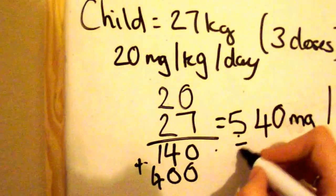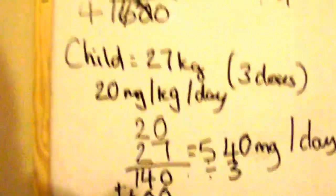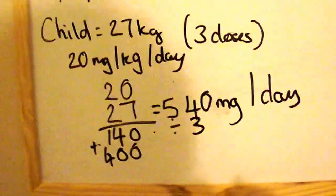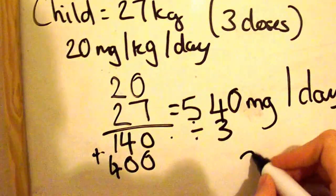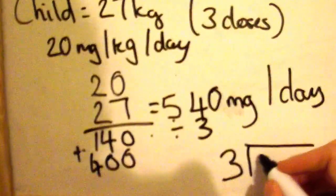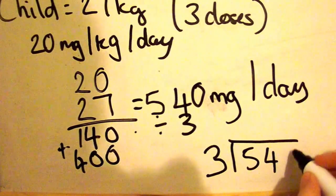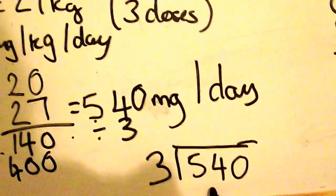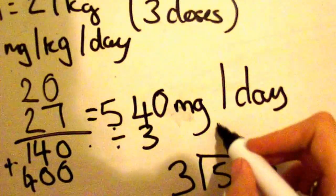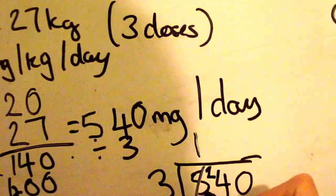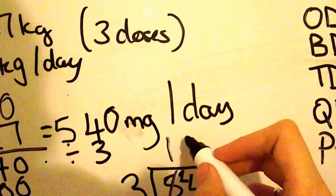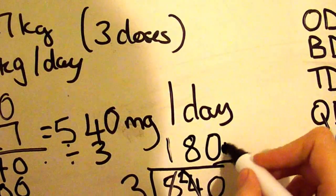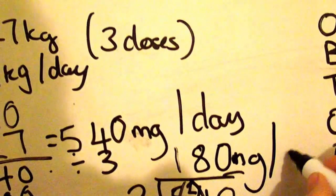And then you have to divide this by 3 this time because it's in 3 doses, not 4. So if you've got 2 doses a day, you divide it by 2. If you've got 5 doses a day, you divide it by 5, whatever you need to do. So here it's exactly the same way. 3 and then 540 in a box. So how many 3s go into 5? 1. Remainder 2. How many 3s go into 24? There are 8. And then you've got the remainder 0. So you've got 180 milligrams per dose.